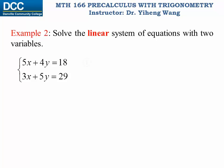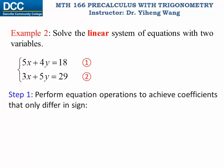So let's number our equations one and two. For this example, the very first step is to perform equation operations to achieve coefficients for one variable that only differ in sign. It is up to you which variable you want to work with. In this case I'm going to start with x. To achieve this new coefficient normally we are looking for the least common multiple. In this case the coefficients for x are 5 and 3, therefore the least common multiple is 15.